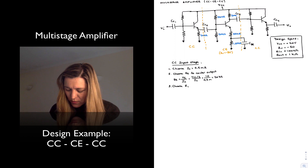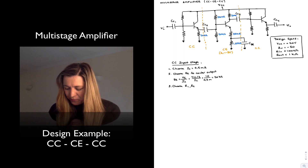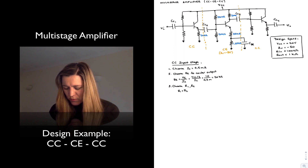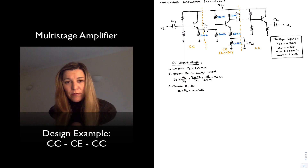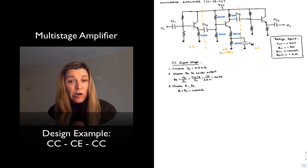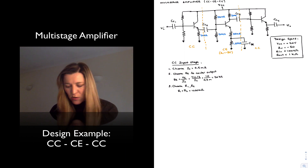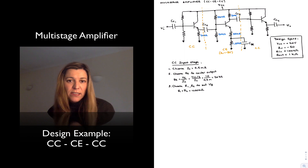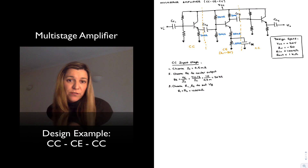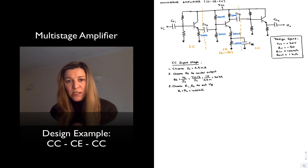Next I'm going to choose R1 and R2. Just like in the previous example, I'm going to select R1 equals R2 equals 400k. That will give a parallel combination of R1 and R2 approximately equal to 200k, which is larger than the 100k I need for my Rin. If you choose the resistors equal to each other, VB will sit at VCC divided by 2, or 10 volts, and VE shifts down by 0.7 volts — a trade-off we're willing to accept for simplicity.